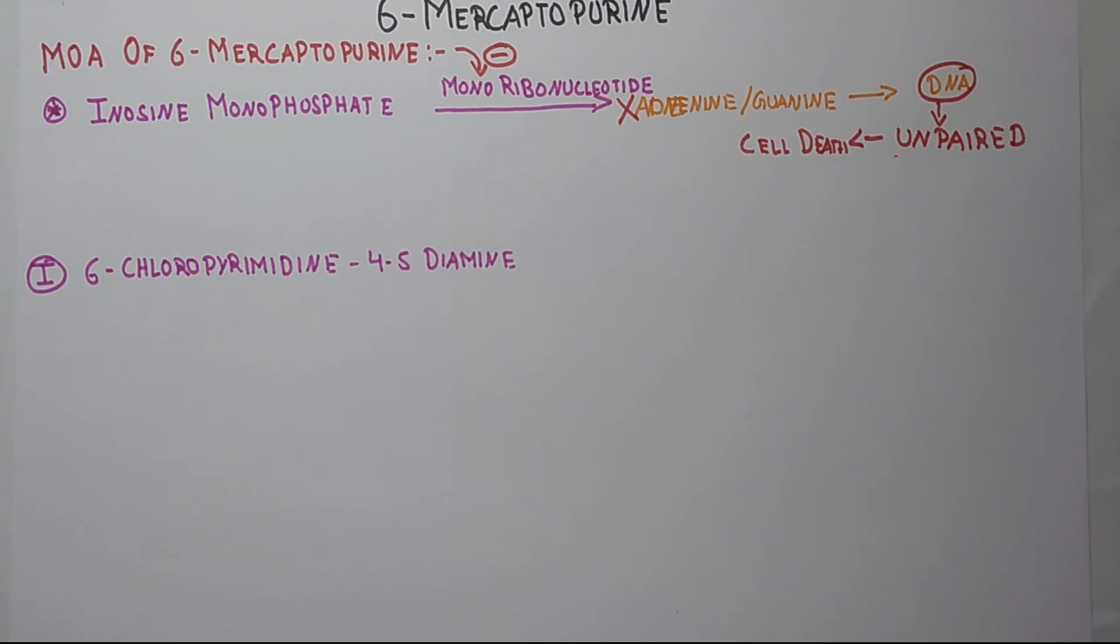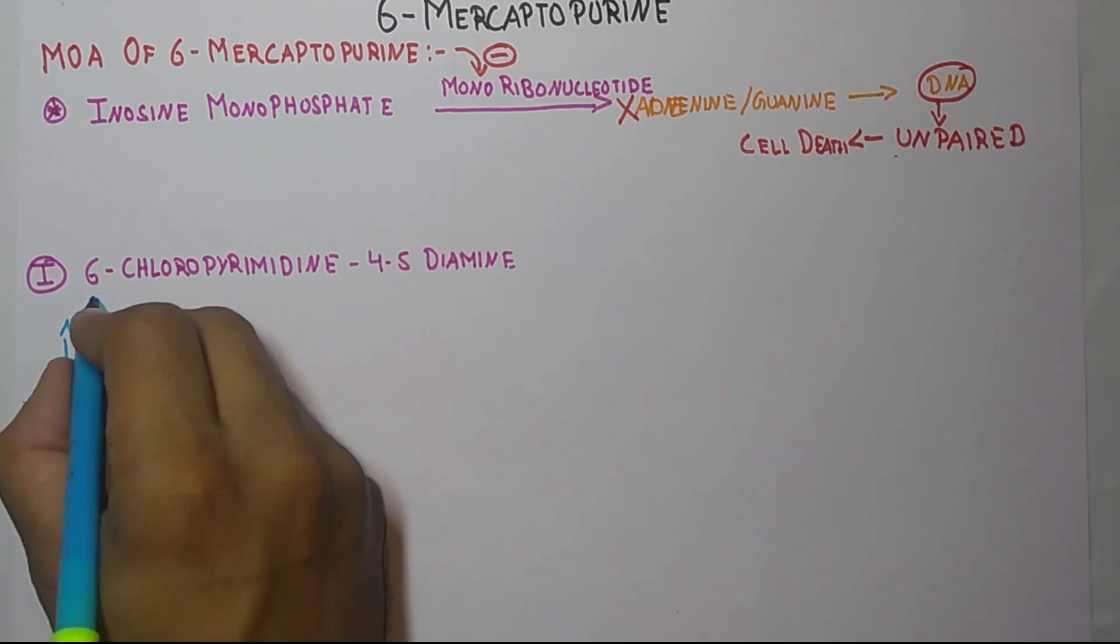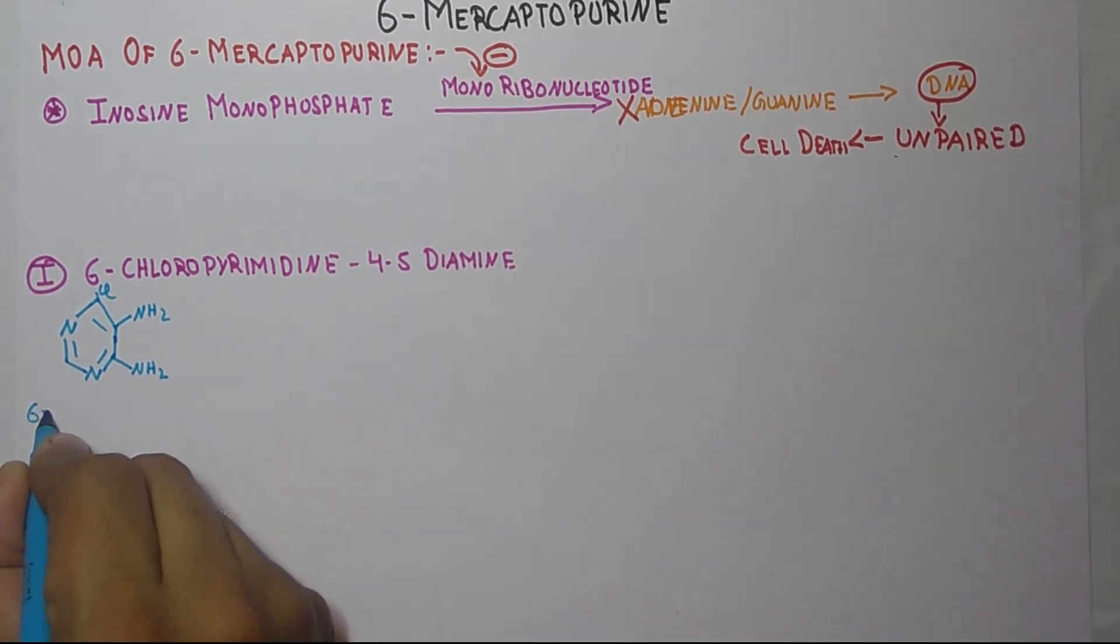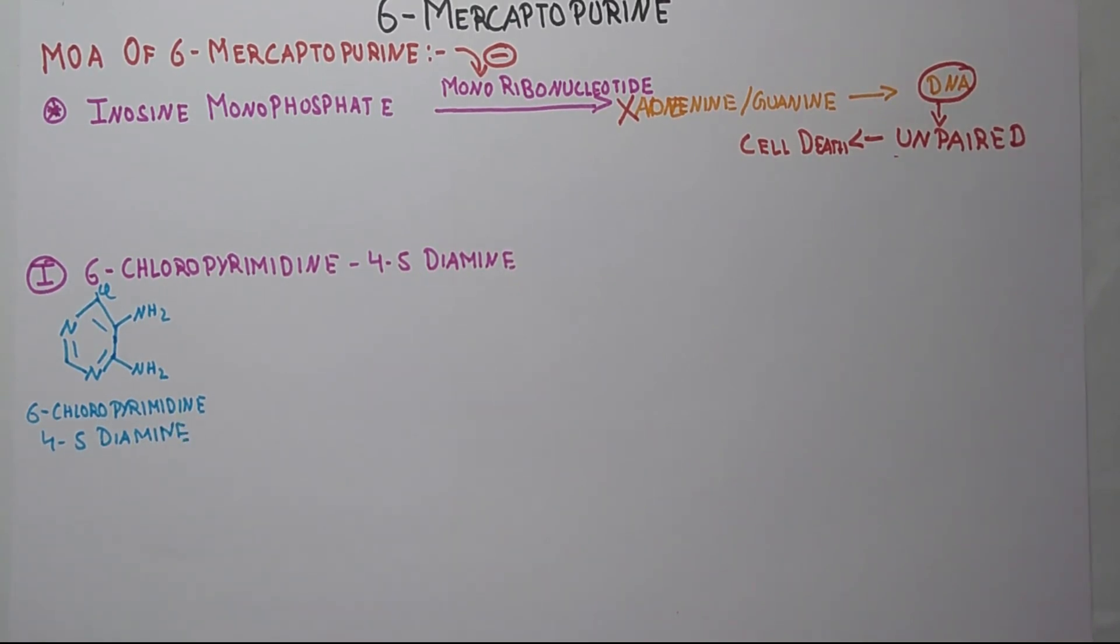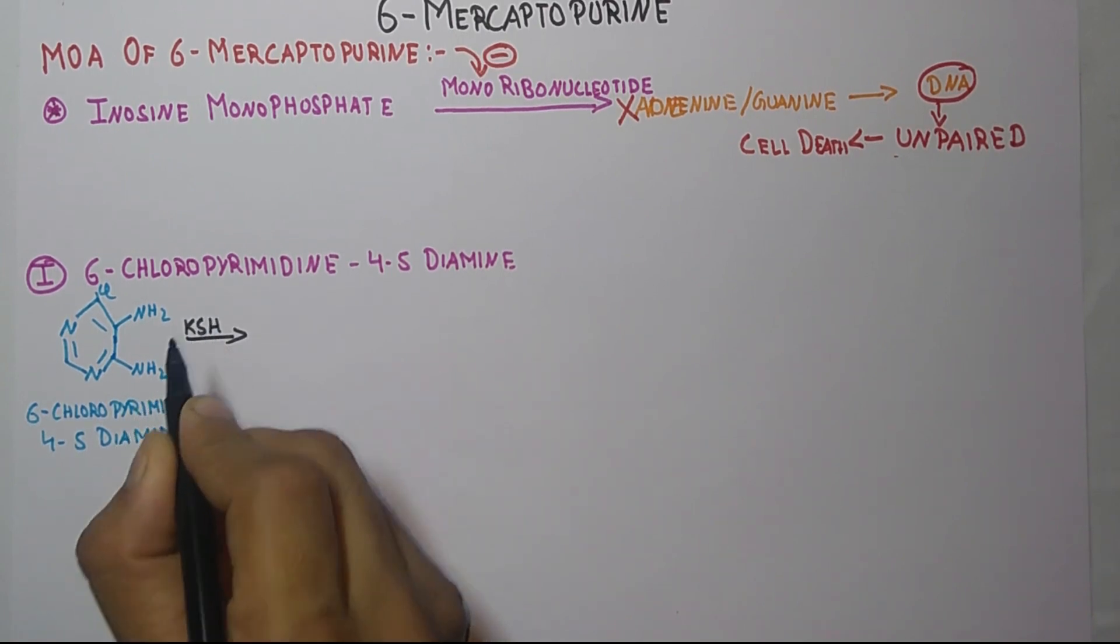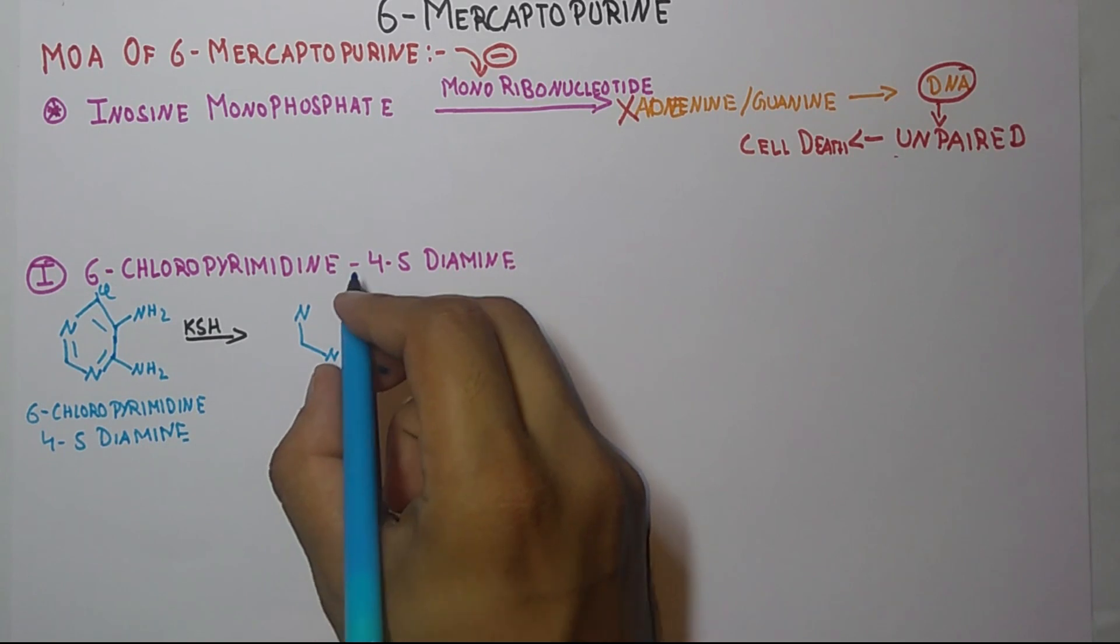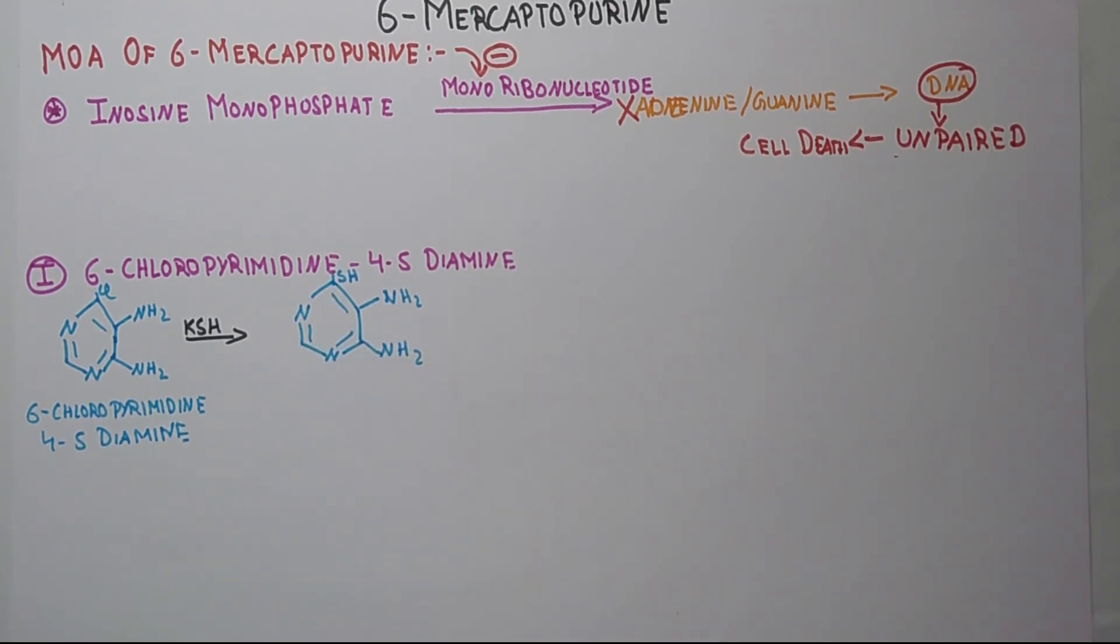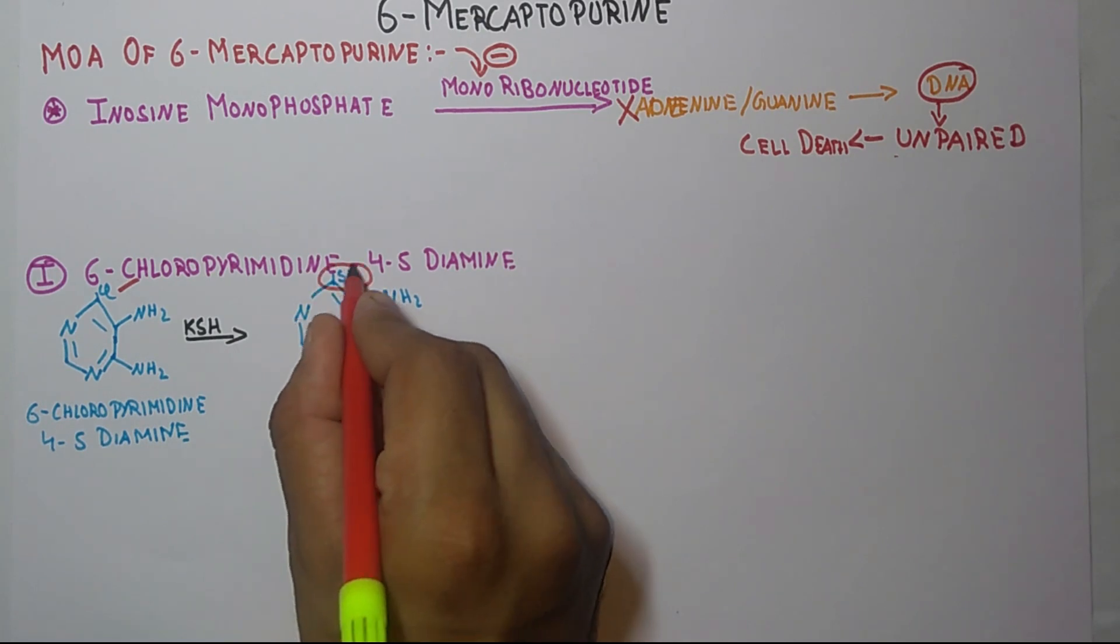Starting from 6-chloropyrimidine, when you treat it with KSH, it gets converted into this structure. So there will be a change in this structure - instead of Cl present here, there is a group that is SH.